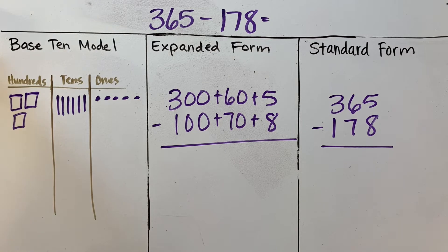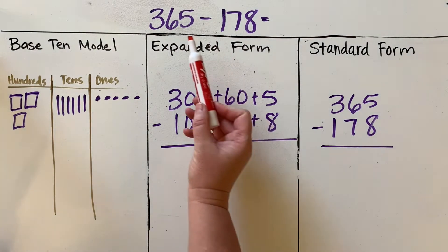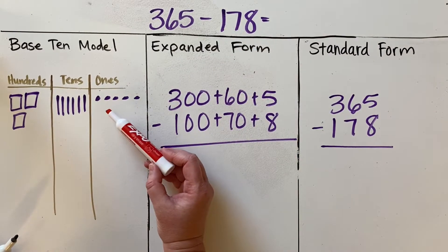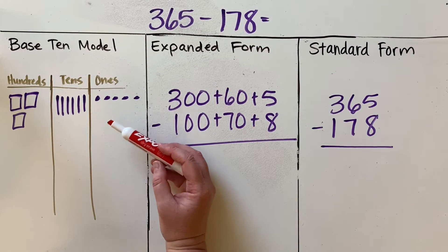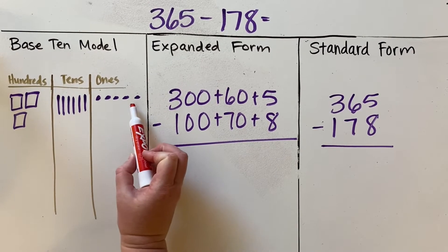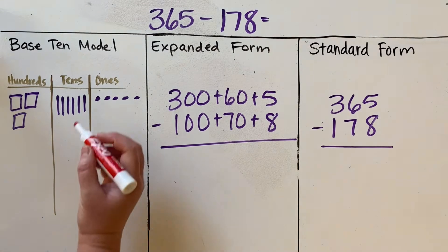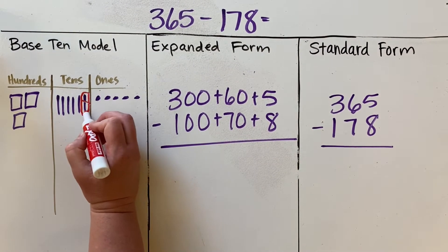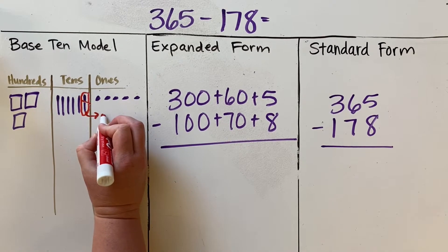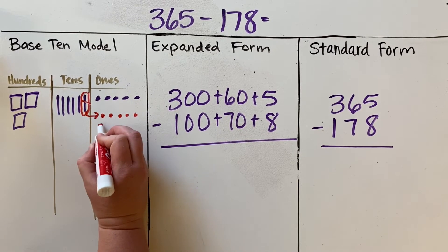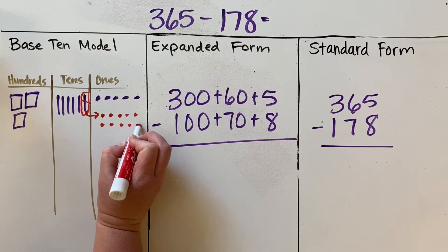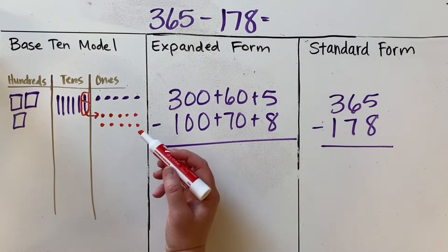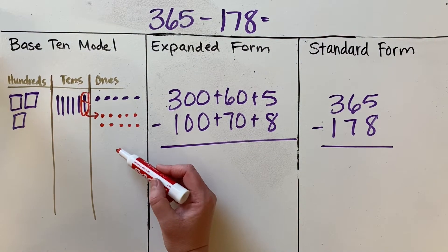If I start my subtraction, I have the number 365, and I want to subtract 178. I look at my ones place, and I need to subtract eight ones, but there aren't eight ones to be subtracted. So what I need to do is decompose a 10. This 10 right here, we're going to decompose it and make it into 10 ones.